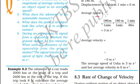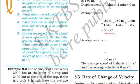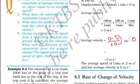Average speed is total distance covered divided by total time taken. Total distance is 180 meters and total time is 1 minute, which we convert to 60 seconds. So 180 divided by 60 gives an average speed of 3 meters per second. For average velocity, the displacement is 0 meters and the time is 60 seconds, so 0 divided by 60 gives an average velocity of 0 meters per second.